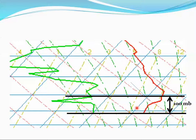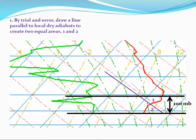The first thing you have to do to find the layer mean potential temperature is draw a line that's parallel to the local dry adiabats to create two equal areas labeled 1 and 2. This process requires some trial and error. Note that the environmental lapse rate in this layer changes from nearly isothermal to there's an actual temperature inversion toward the top of the layer.